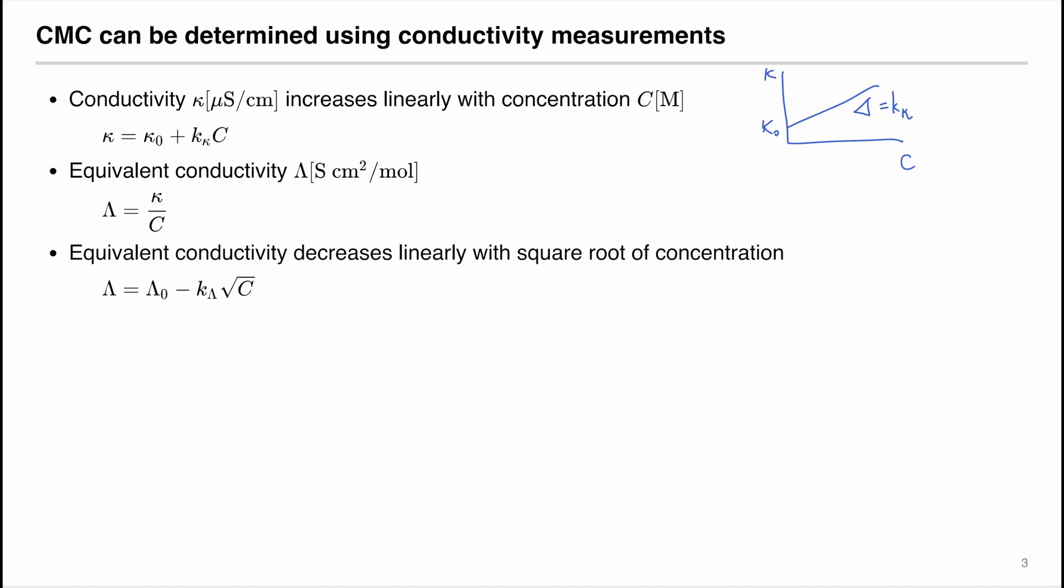We can determine another quantity called the equivalent conductivity, Λ, that has units of Siemens times centimeter squared per mole, which is defined as the conductivity divided by the concentration of the solution. The equivalent conductivity decreases linearly with the square root of concentration. So when we plot the equivalent conductivity Λ with respect to the square root of concentration c, we expect to see a linear decrease, where the y-intercept is Λ₀, a constant, and the slope is equal to negative kΛ, and kΛ is a positive constant.